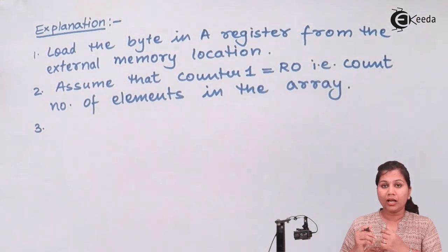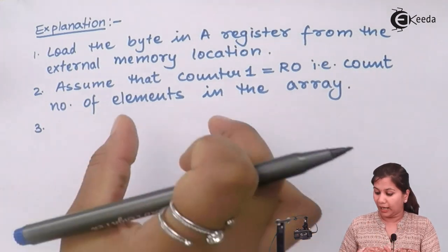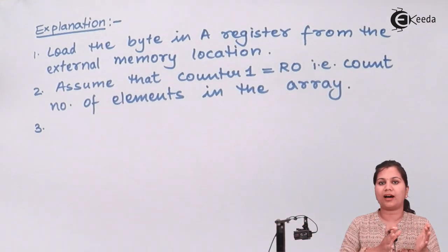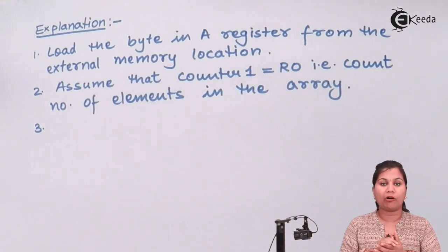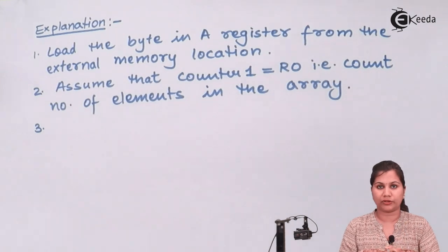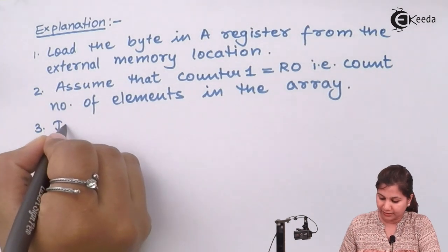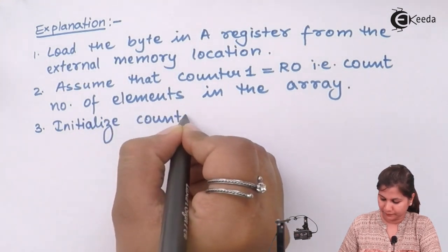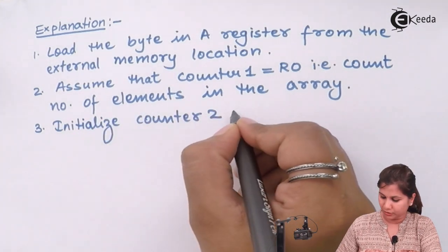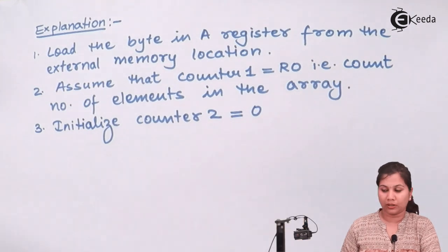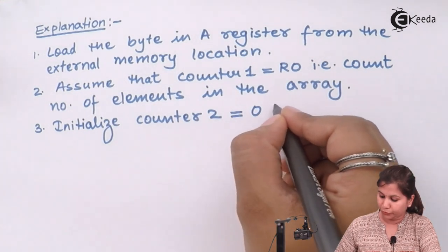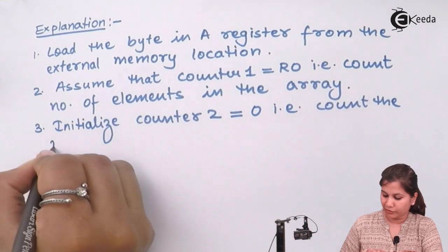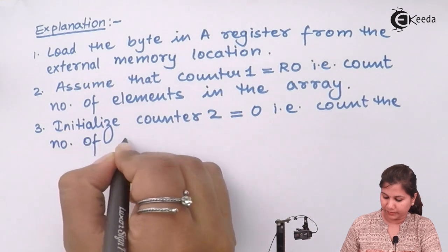Third, we need to count how many of those elements are positive numbers. So we initialize a second counter, counter 2, to 0. This counter 2 is going to count the number of positive numbers.